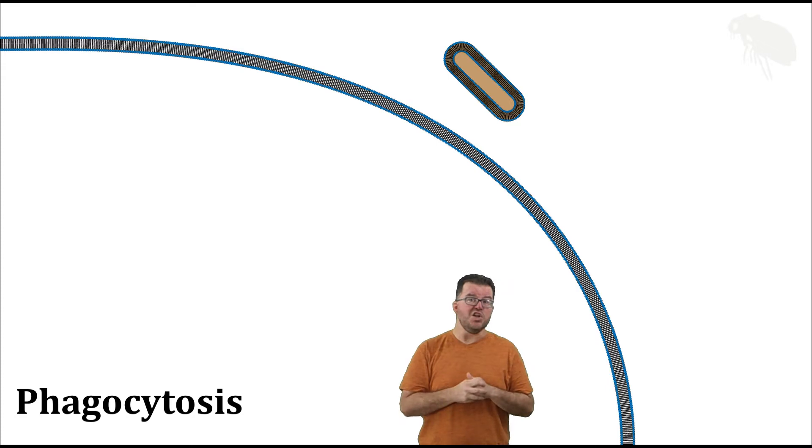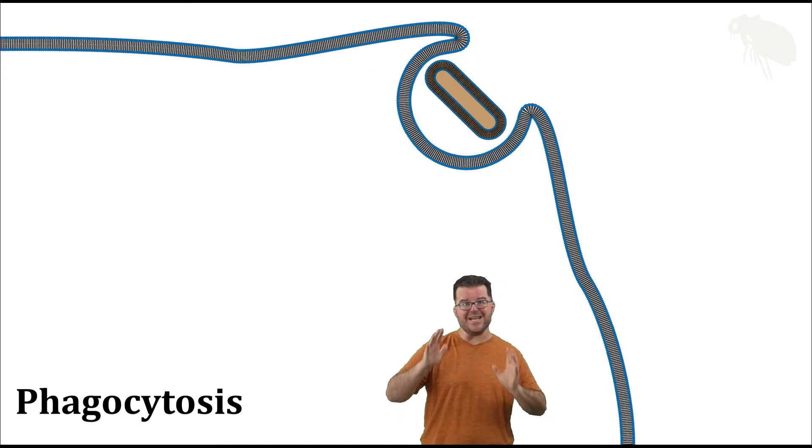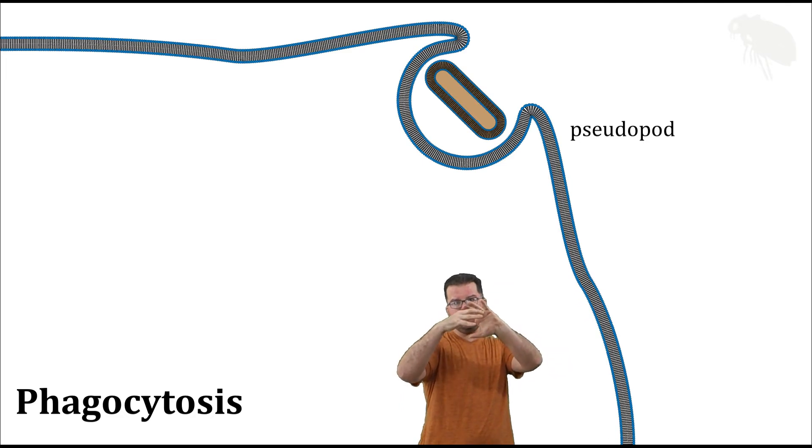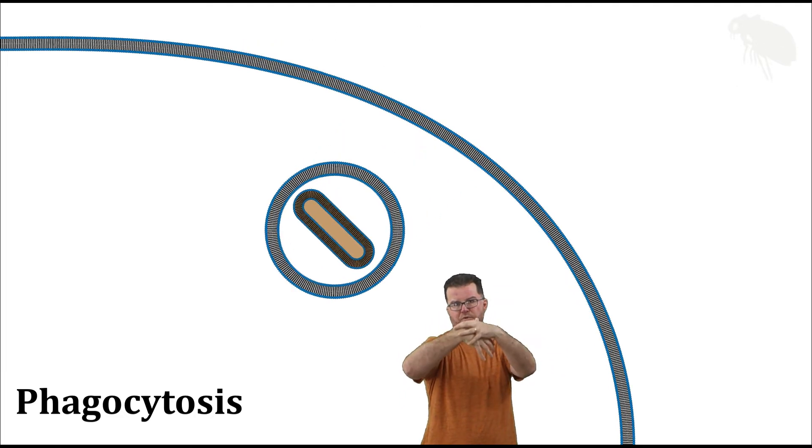So if you watch, our cell is going to engulf that bacterial cell by extending the membrane around it. Now, those extensions are called pseudopods. And as those pseudopods form, they essentially wrap around the object to be engulfed. And once they meet, pull it into a vesicle, and it then is in the cell. That's phagocytosis: solid objects, larger objects being pulled into the cell when the cell extends the membrane around that object.